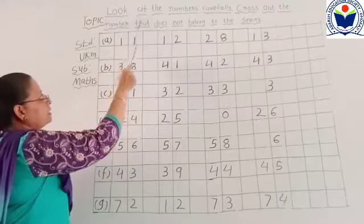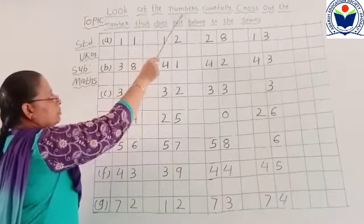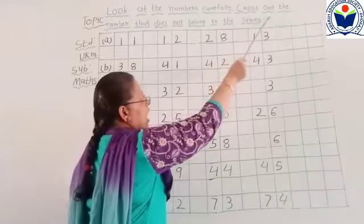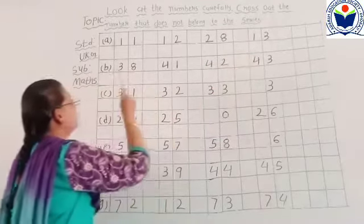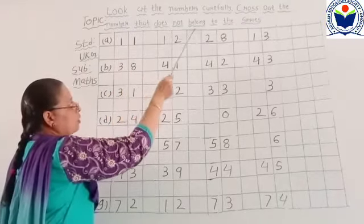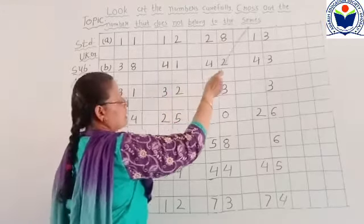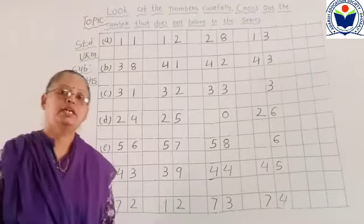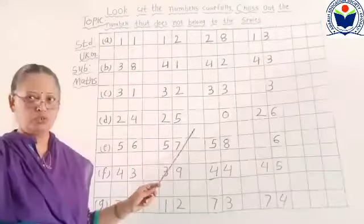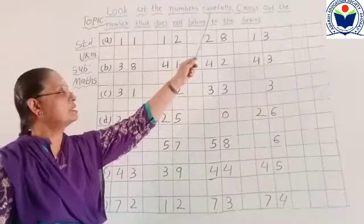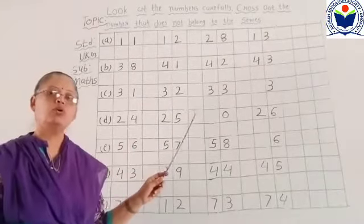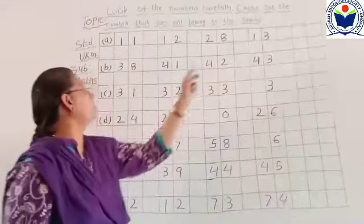Look at the numbers. Cross out the number. The number that does not belong to the series. Today they are going to cross out the number. Cross out the number that does not belong to the series.